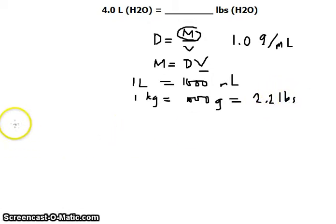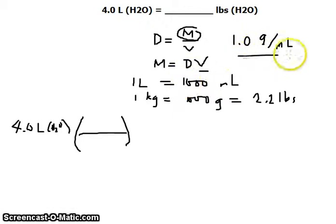Now we can proceed with our solution, from 4 liters of H2O. We will need to convert this first into milliliters so that we can use our density. 1 liter is equivalent to 1,000 milliliters. We can cancel the liters. Now we're given a unit in milliliters.